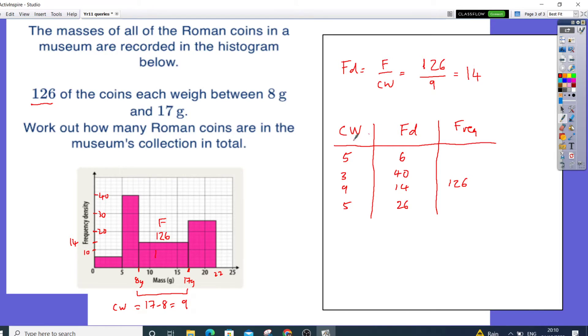So simply just multiply these numbers together. So 5 times 6 is 30. 3 times 40 is 120. And 5 times 26 is 130. Times it by 10, then half it.